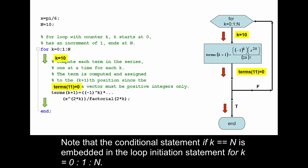Note that the conditional statement if k == n is embedded in the loop initiation statement for k equals 0 colon 1 colon n.